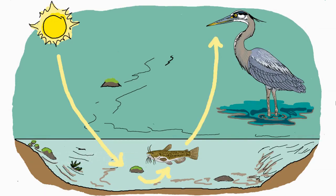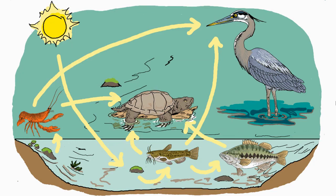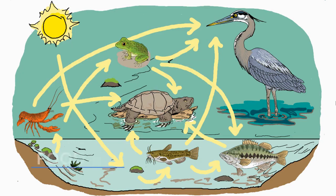Food chains show how energy moves between organisms from the sun all the way to the great blue heron. Since most organisms get their energy from multiple places, ecosystems are made up of multiple food chains. When we put these food chains together, we get a food web.